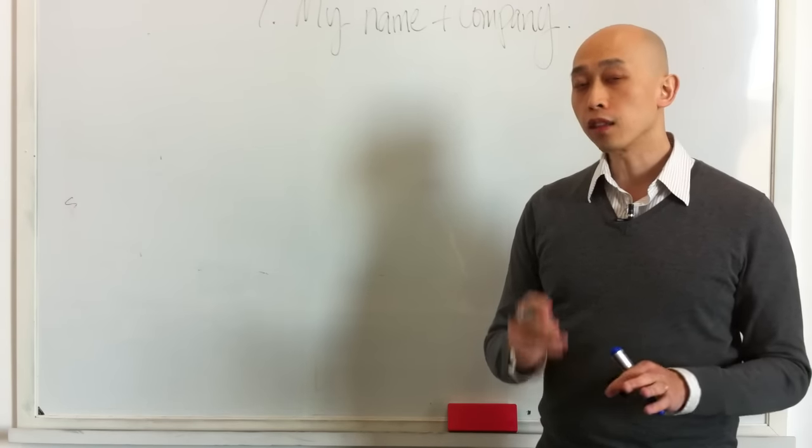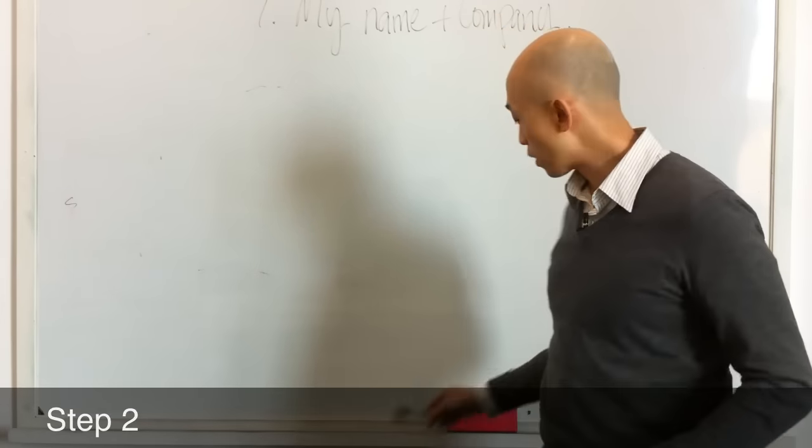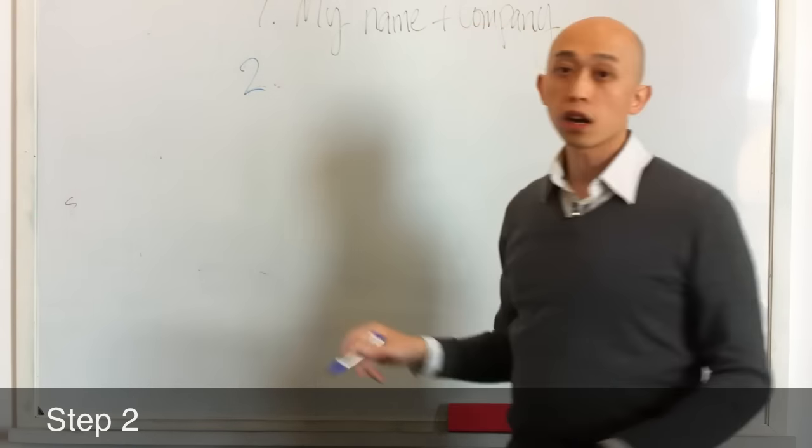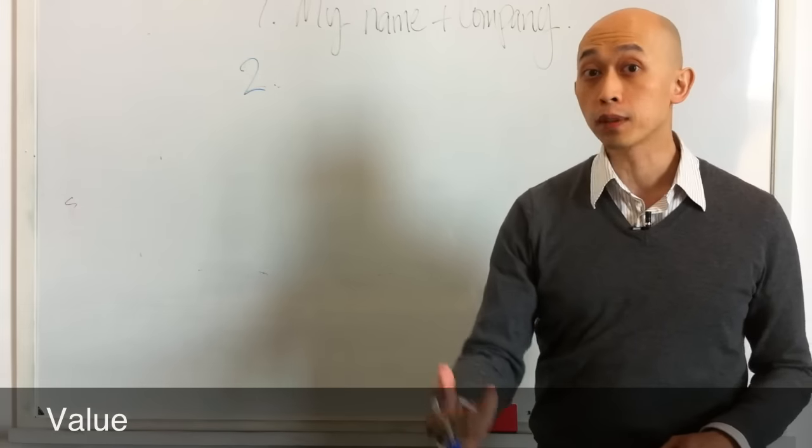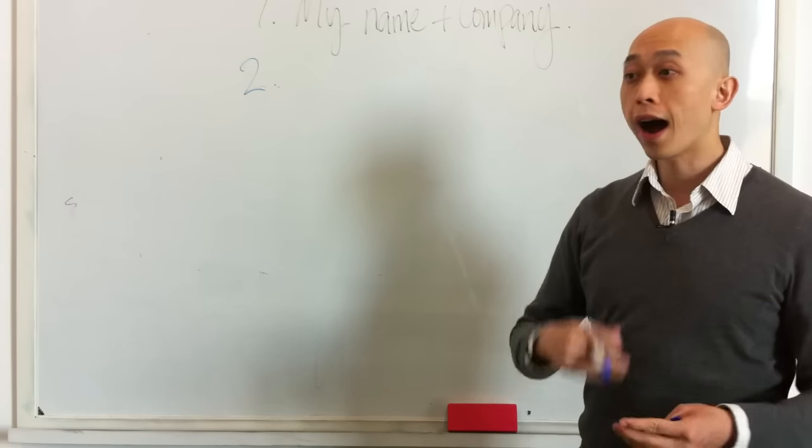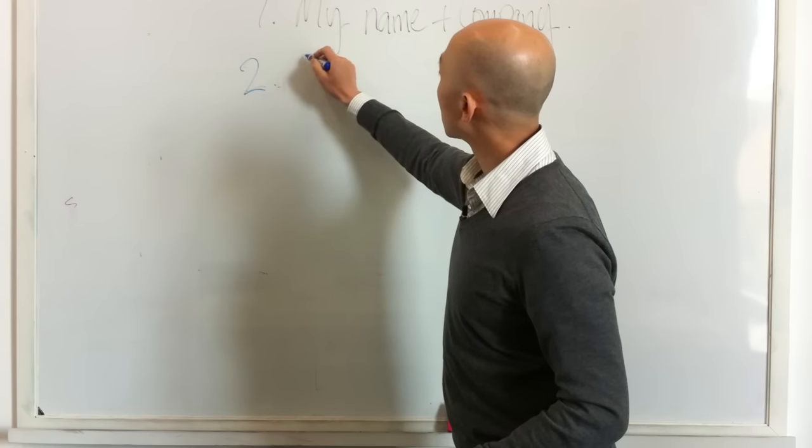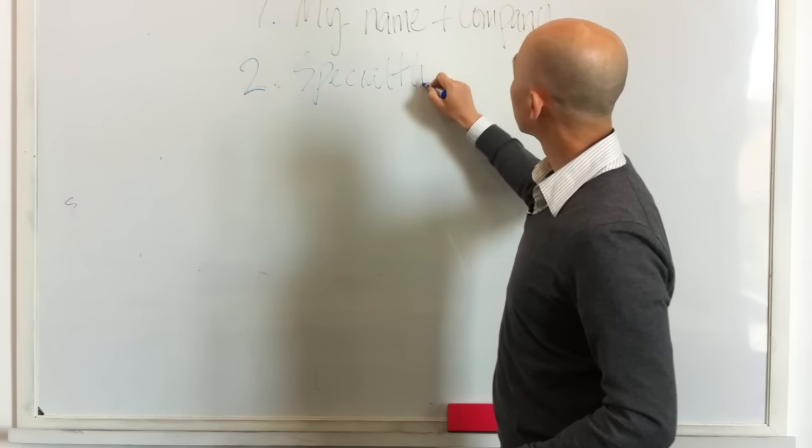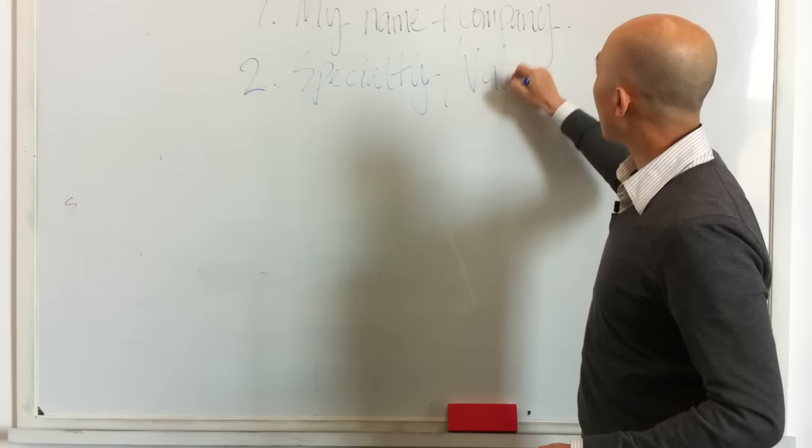Then the second part and the third part are actually the most critical. The second part to this, I'll change pens here, get one that actually works a little better. The second part to this is you want to talk about what value you provide to people. What is it that you do that is special that can help somebody? And usually, you can start by saying, our specialty or I help, or we help, whatever it may be. So you want to talk about your specialty or whatever it is your value that you provide people.